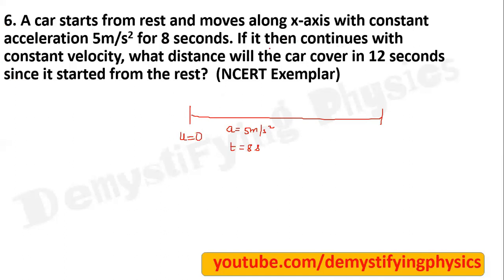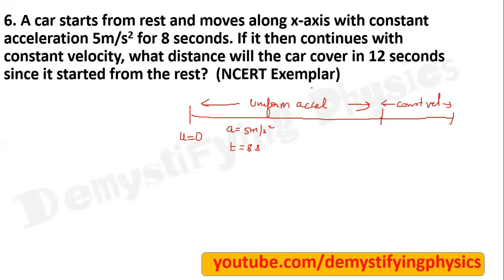If it then continues with constant velocity — okay, after 8 seconds it moves with constant velocity. In this portion it is moving with uniform acceleration, so this is uniformly accelerated motion. And after this it is moving with constant velocity. Now, what distance will the car cover in 12 seconds since it started from rest? This is a very good question. Pause the video and first think yourself.